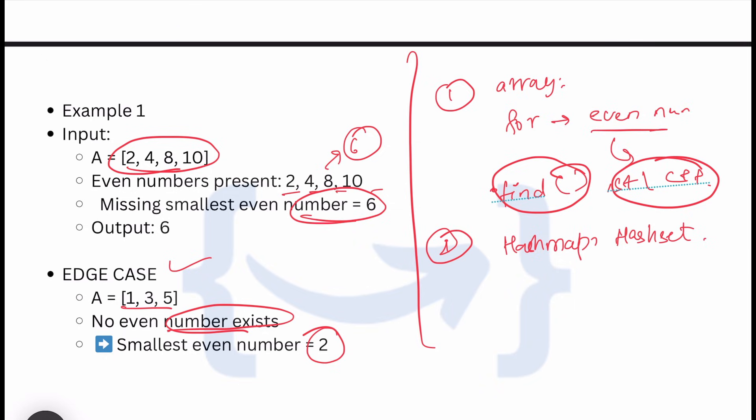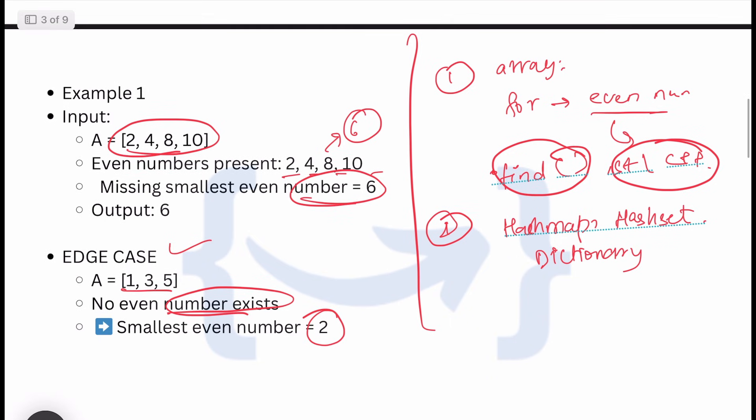What we can do is set all array elements. If we think of it as a dictionary: 2, 4, 8, 10 with frequency 1, 1, 1, 1. We have frequency one for each element.